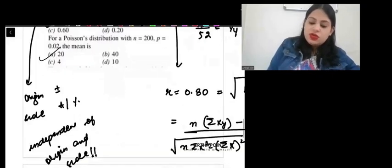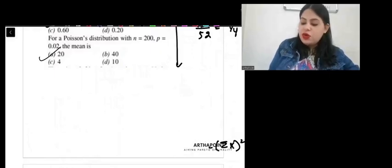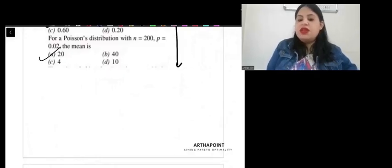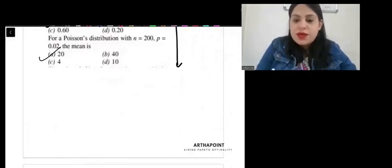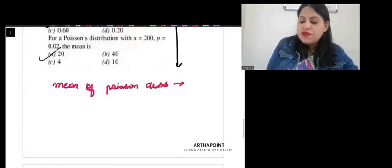Come to the next question. For Poisson distribution with n equals 200, p equals 0.02, the mean is. It would be good if you read about different kinds of distributions. You should at least know about binomial, Poisson, exponential. These distributions, how to calculate mean or median, you should know about it. So, when we talk about the mean of Poisson distribution, the mean of Poisson distribution is given by lambda.